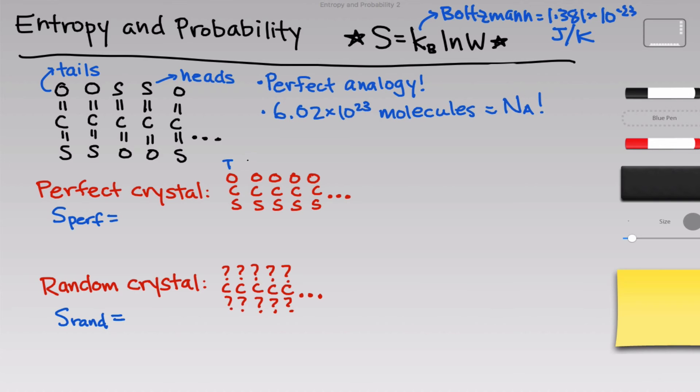The perfect crystal is all tails, all of the oxygens pointing in the same direction. There's only one way, there's only one possible arrangement that generates that state, just all the oxygens pointing up. That means W equals one for the perfect crystal, and since S is equal to Boltzmann's constant times the natural log of W, and the natural log of one is equal to zero, the entropy of that state is zero. We're going to see this idea again in the third law of thermodynamics.